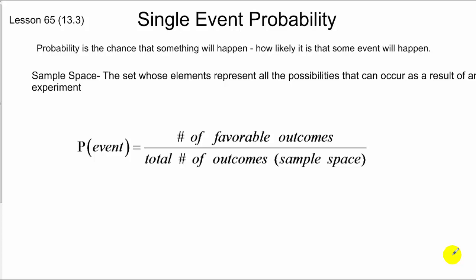We're moving to probability today. Probability, as you might know, is just the chance of something happening or how likely something is to happen. We talk often about sample space or the set of all possibilities that can occur as a result of an event. And the probability is calculated by taking the number of favorable outcomes over the total number of outcomes or, as we've already talked about, that being sample space.